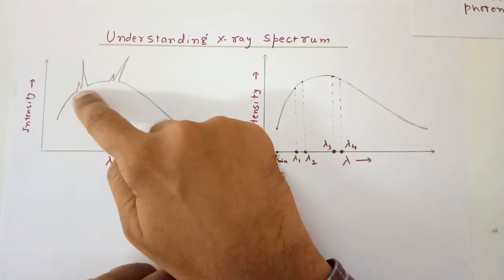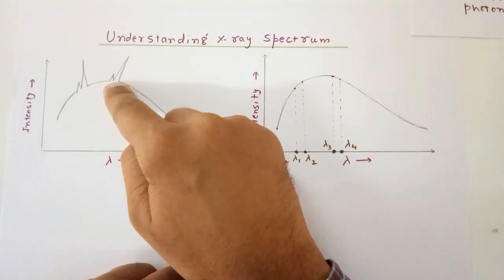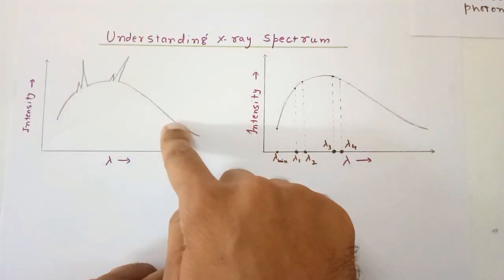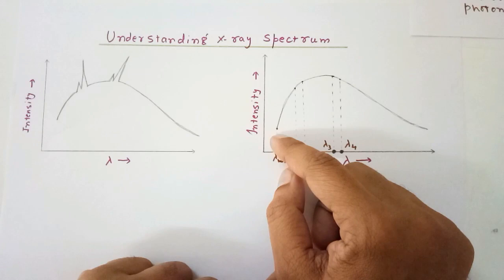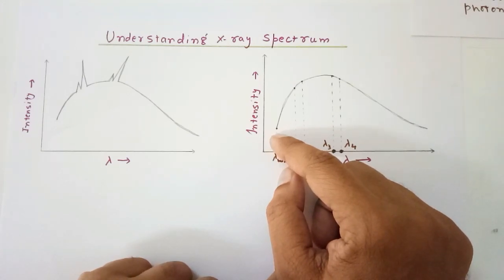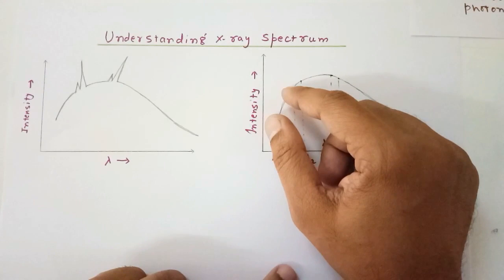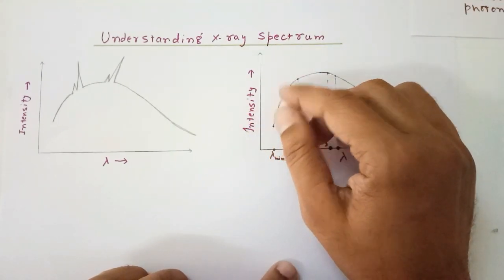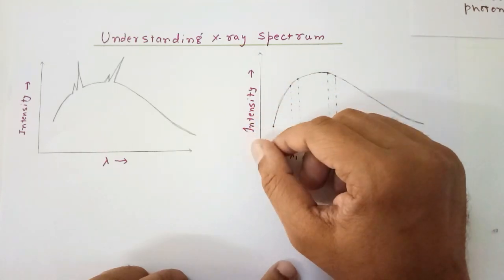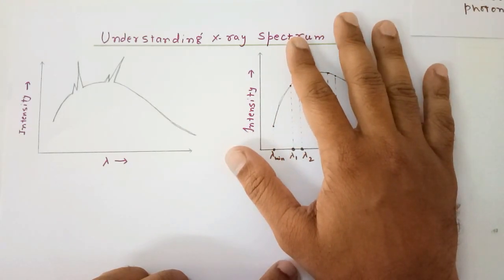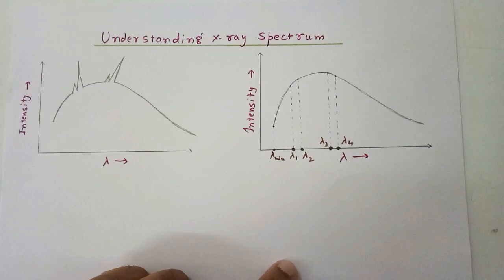The graph is continuous but also has sharp peaks at certain points before continuing again. From this graph we know that there are two types of X-ray photons: characteristic X-ray photons as well as continuous X-ray photons. This segment of the graph represents only the continuous X-ray spectrum.